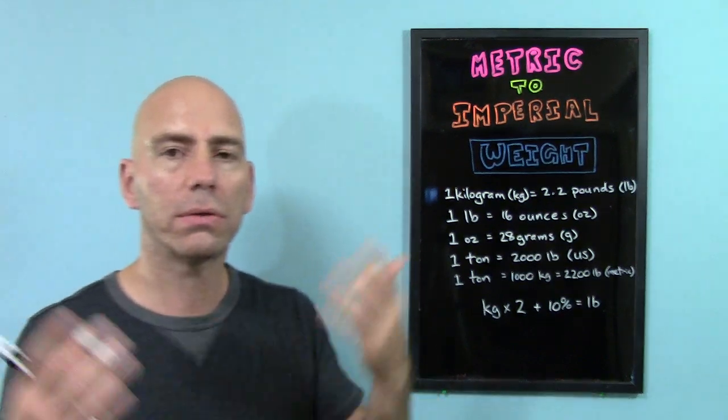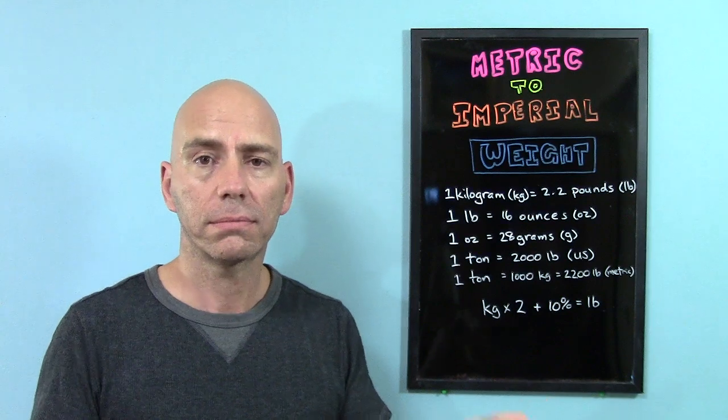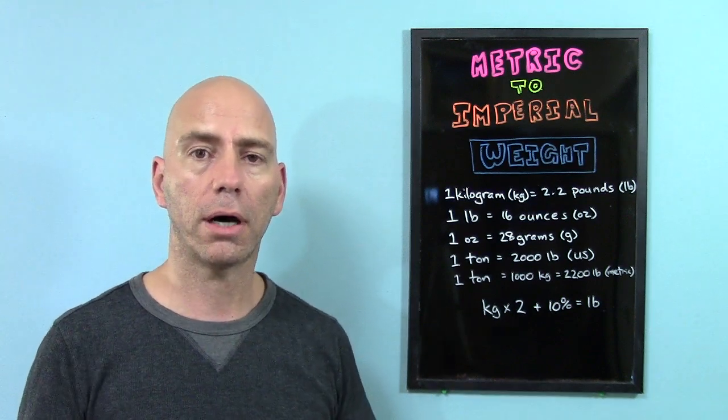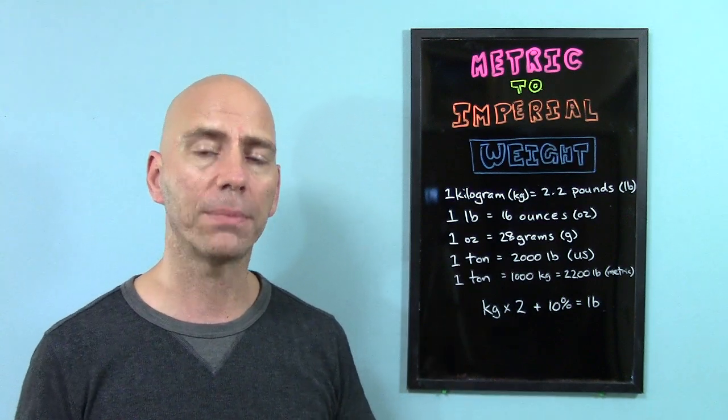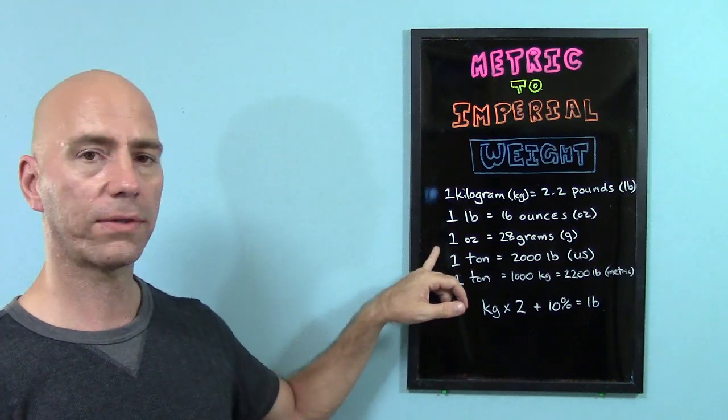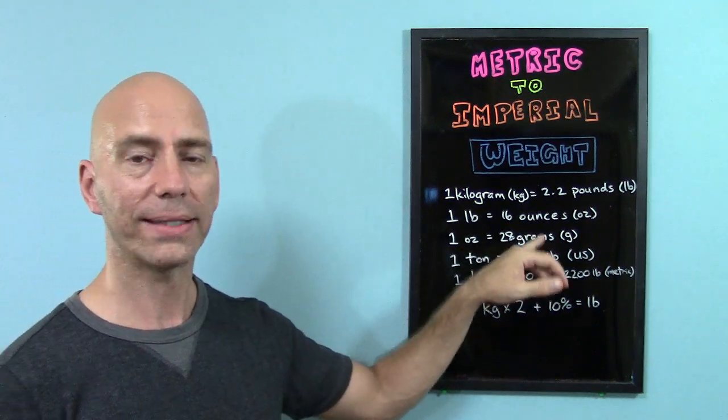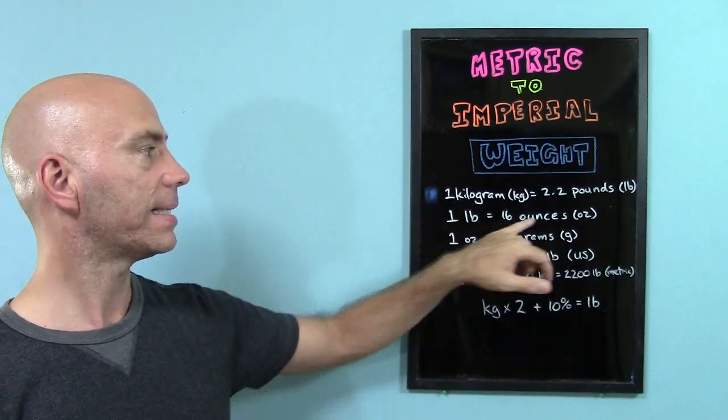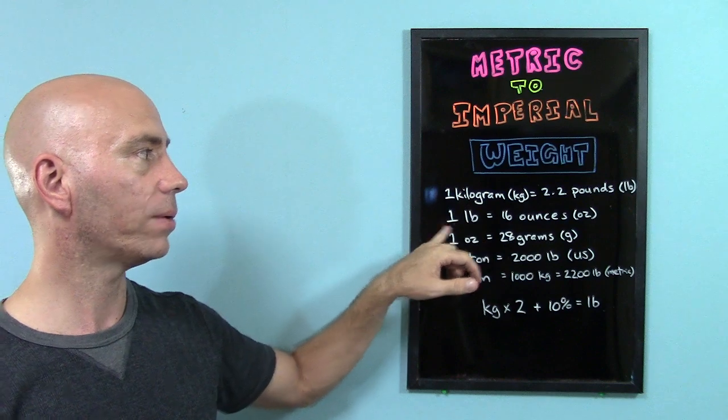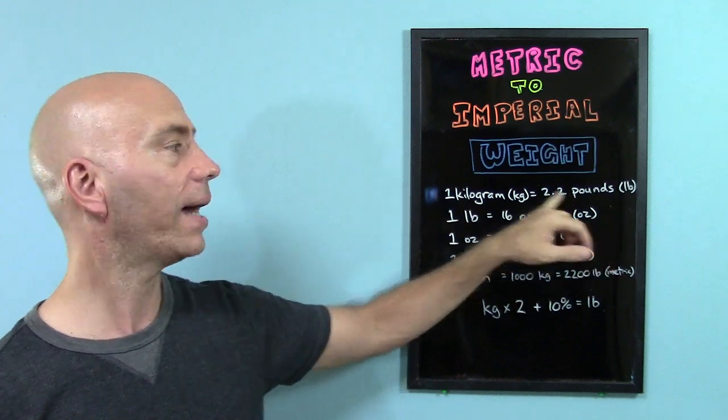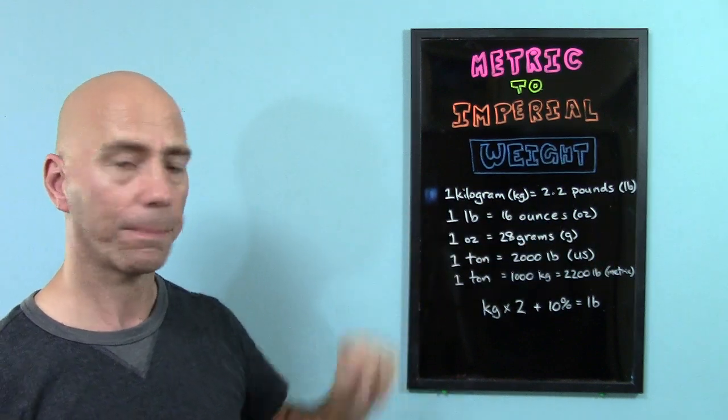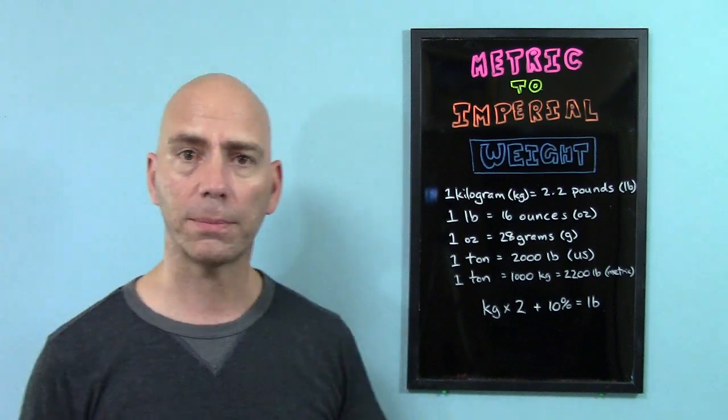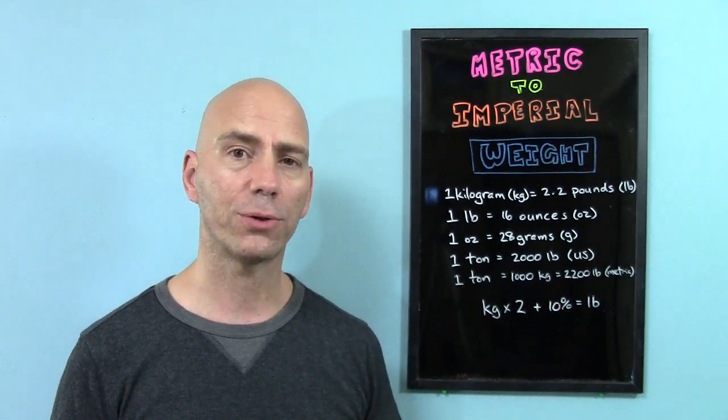So what is an ounce? You are familiar with grams. Remember this: one ounce is 28 grams. So we have 28 grams in an ounce, 16 ounces in a pound, and 2.2 pounds in a kilogram. These are important numbers, and you should try to remember them.